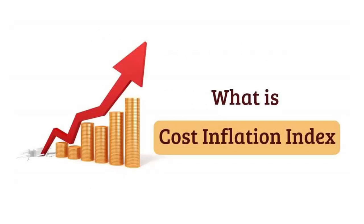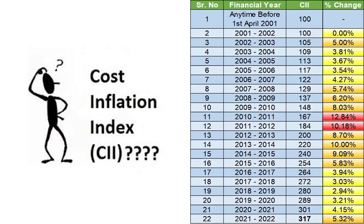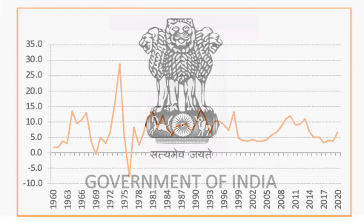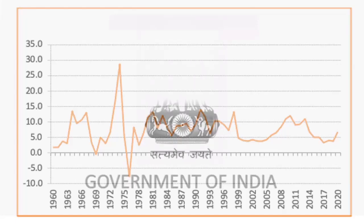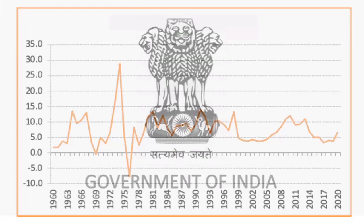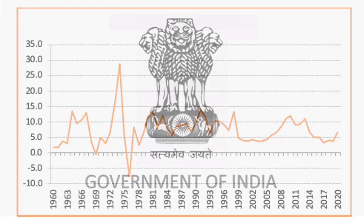Next we come to the concept of cost inflation index or CII. Indexation rates are calculated using this cost inflation index. The CII for the last 22 years is shown on the screen and will be referred to further in this video. The CII is a figure issued by the central government every year that represents the year's inflation. If in a year inflation was high, the CII number would be high and vice versa.